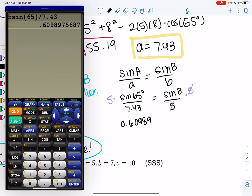0.609898 equals sine of b. I just use a lot of decimal places. We can go ahead and do sine inverse. And I'll just do second ans because then I can use all the decimal places. And I get 37.58 degrees.